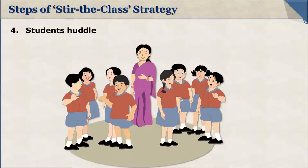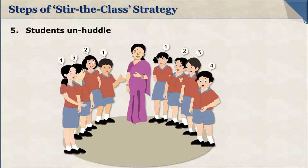In the fourth step, the students form huddles with their respective groups and start discussing the problem. Once the students reach a common solution, they unhuddle and stand with their group members in a straight line.